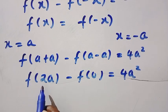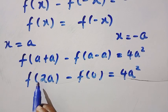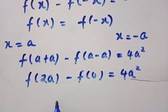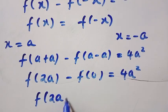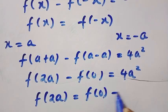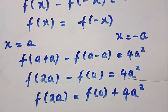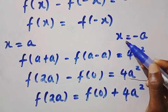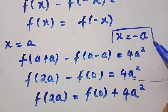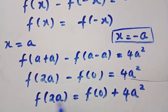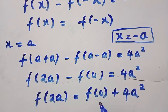Making f of 2a the subject by transferring f of 0 to the other side, we have f of 2a equals f of 0 plus 4a squared. If we test with x equals minus a, we get exactly the same result: f of 2a equals f of 0 plus 4a squared.